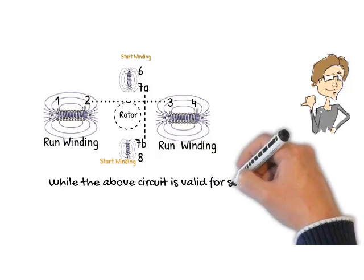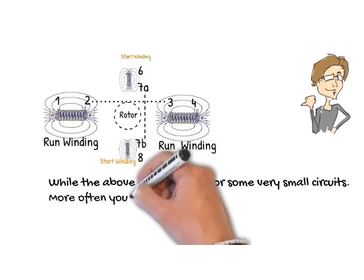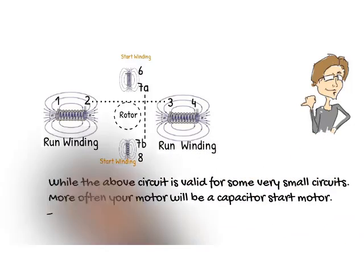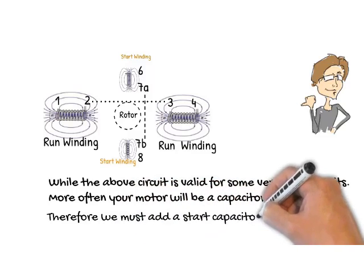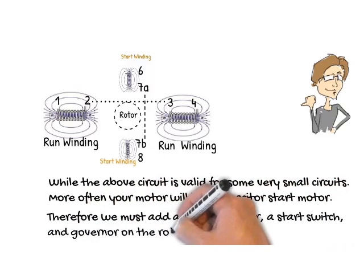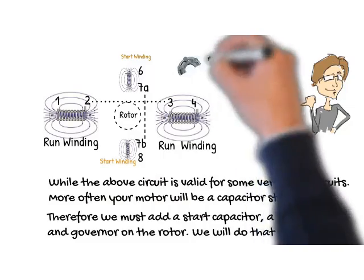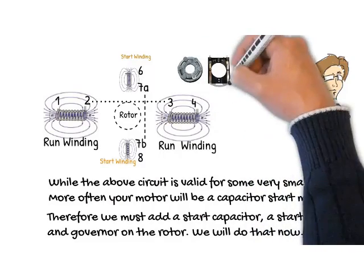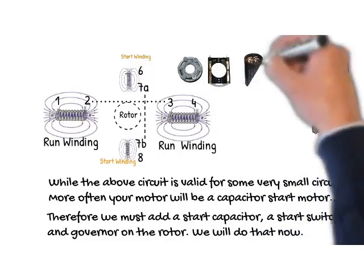While the above circuit is valid for some very small circuits, more often your motor will be a capacitor start motor. Therefore, we must add a start capacitor, a start switch, and a governor on the rotor. We will do that now.